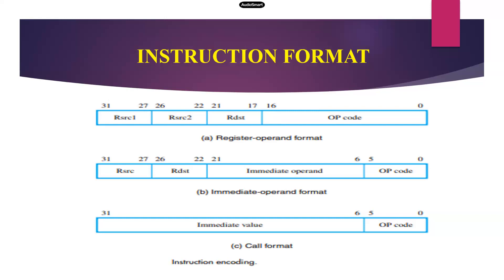This R format is most suitable for arithmetic operation and logical operation. There are 2 source operands and 1 destination operand. The opcode will be allocated 16 bits (0 to 16), then the next 5 bits will be allocated for destination, another 5 bits for source 2, and the last 5 bits will be allocated for source 1.